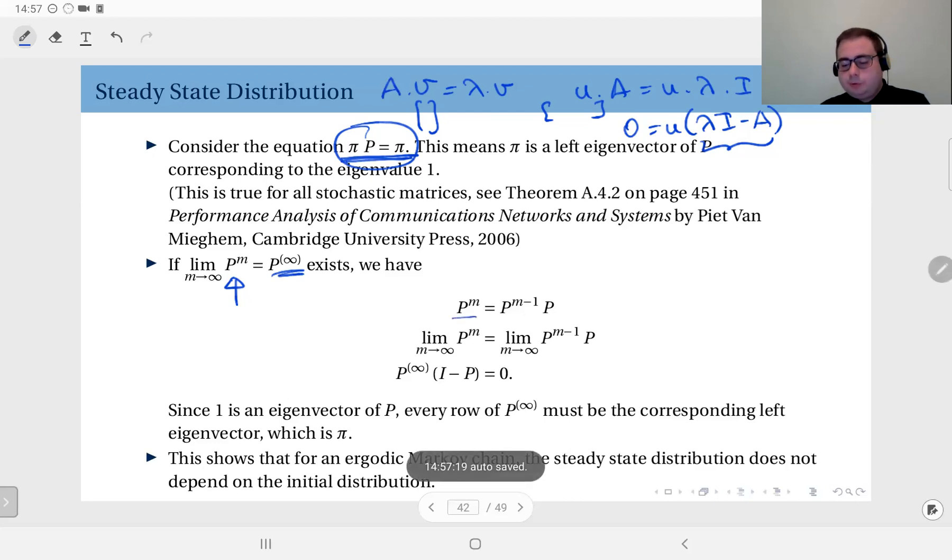for any m value you can write P^m = P^(m-1) P. And if you take the limit as m goes to infinity of both sides, this goes to P∞ and this also goes to P∞. Therefore, you will have P∞ = P∞ P, right?